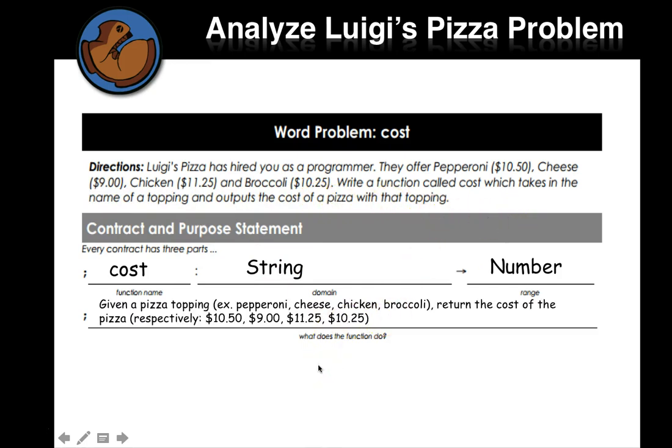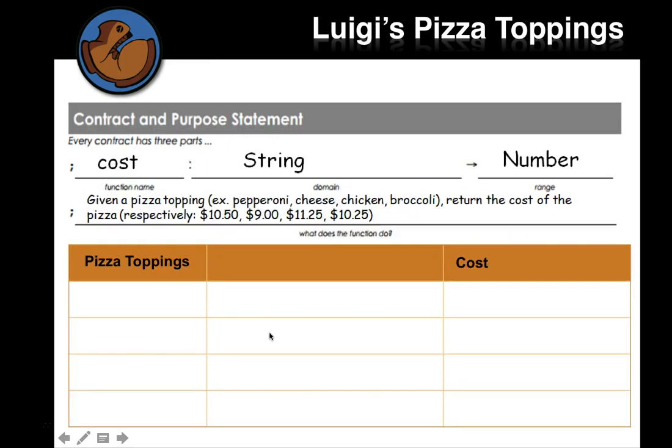And then our purpose statement will say, given a pizza topping, return the cost of the pizza. Okay, and they were really explicit here, which they gave the examples of all the different toppings and all the different costs. So here we're going to build up some examples. So this is going to be a new kind of function. We're going to learn something new. So the pizza toppings are pepperoni, and here we have it in quotes. We know it's a string. Pepperoni, cheese, chicken, broccoli.